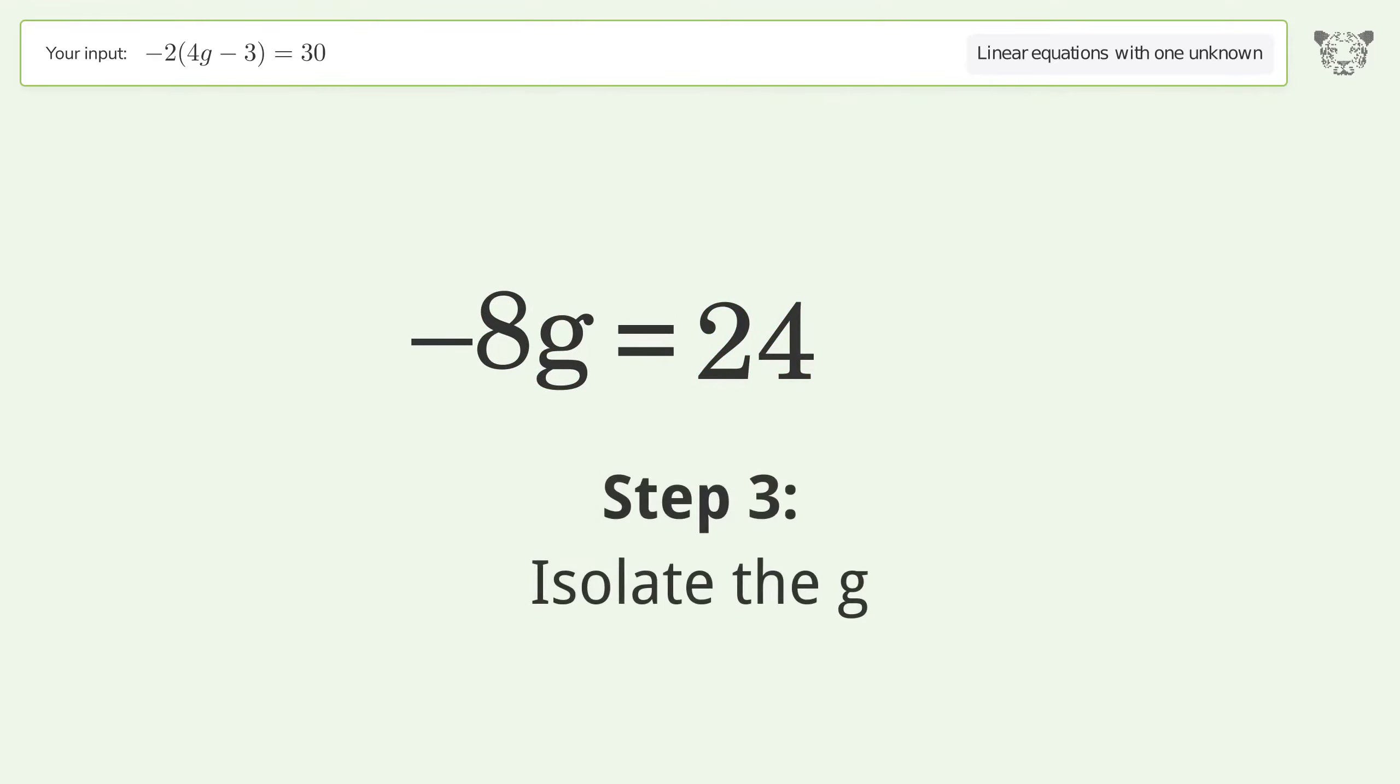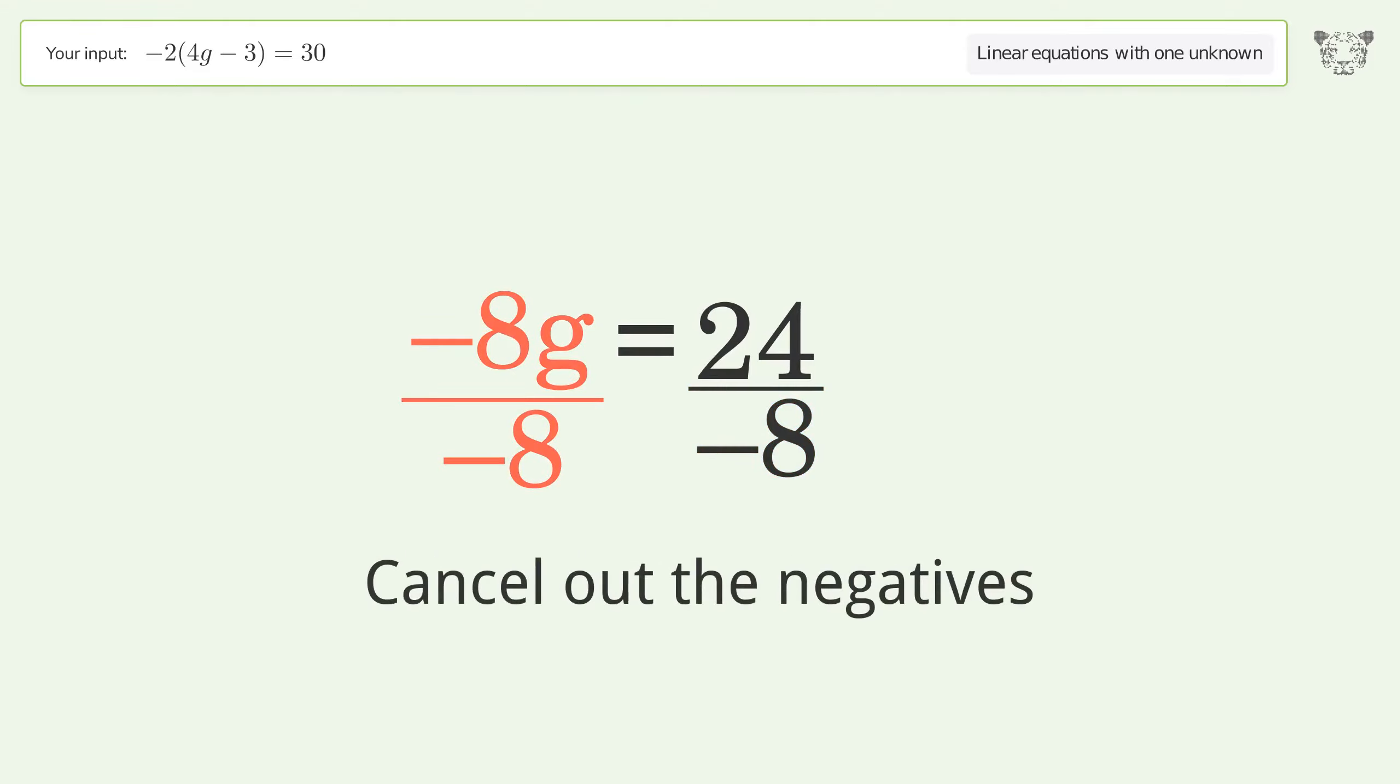Isolate the g. Divide both sides by negative 8. Cancel out the negatives.